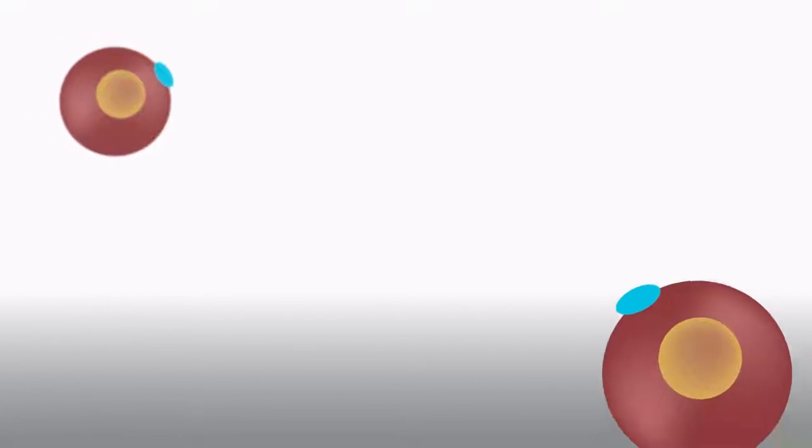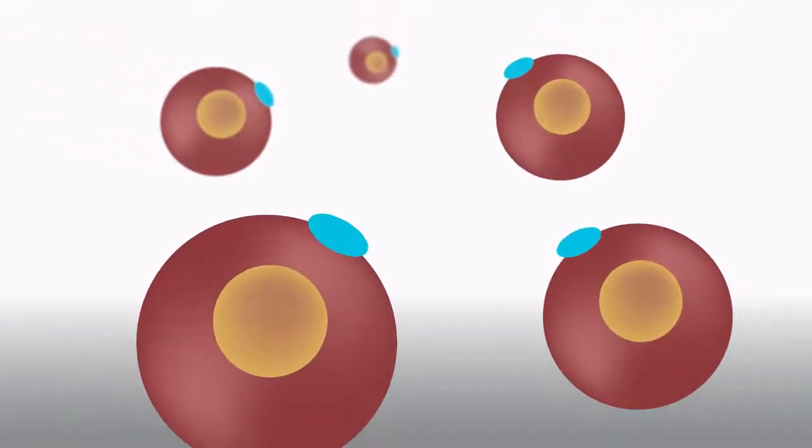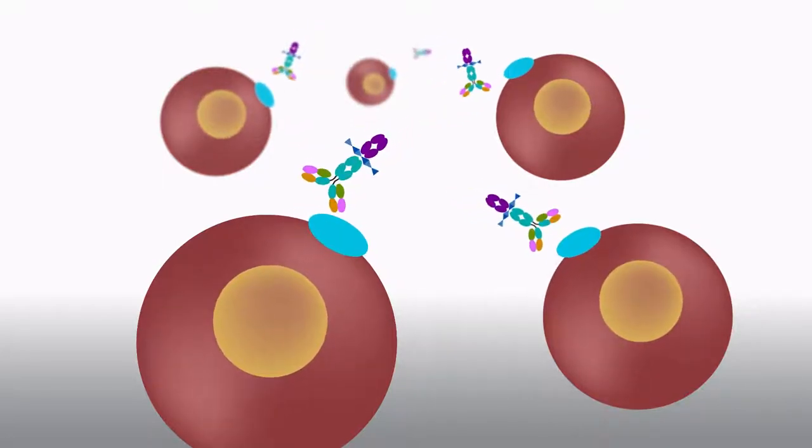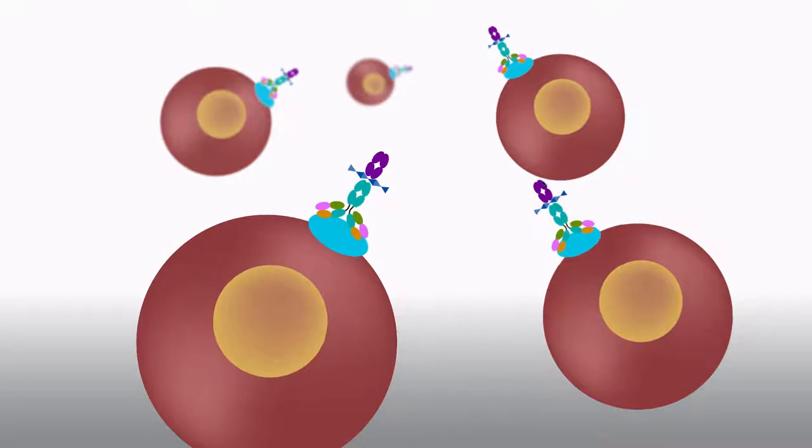That has many researchers turning to more precise, molecular-level targeting strategies, most notably by using antibodies. Researchers can design antibodies to lock onto and disrupt receptors that keep cancer cells alive and replicating.